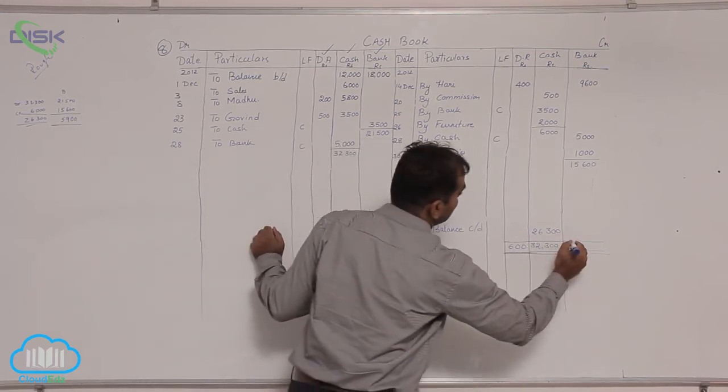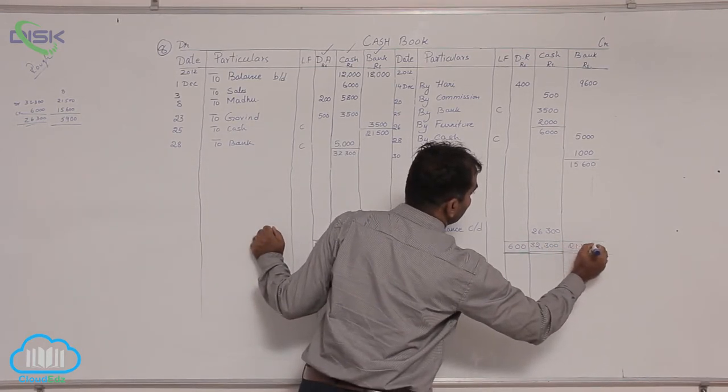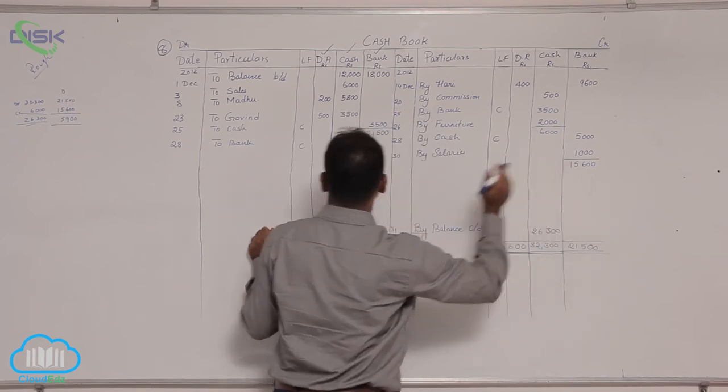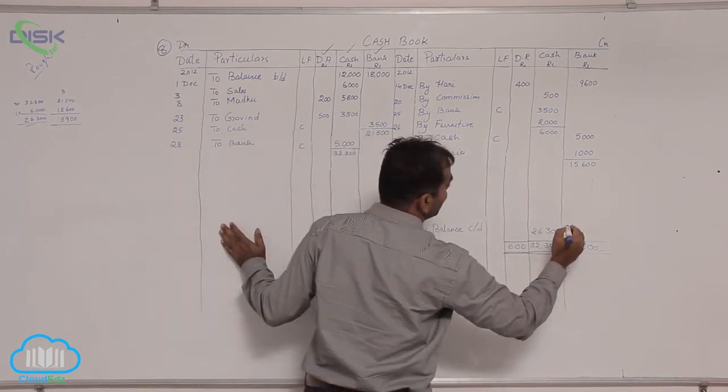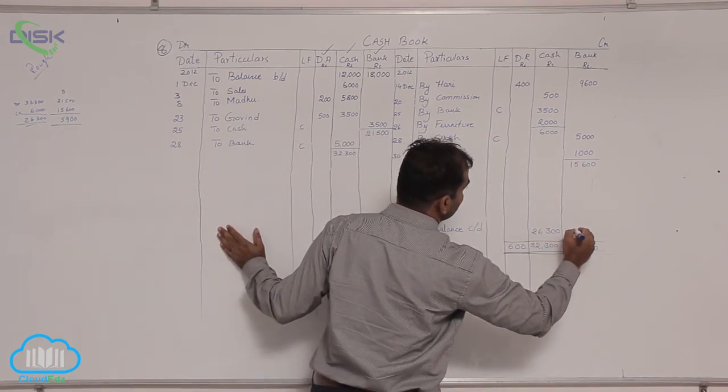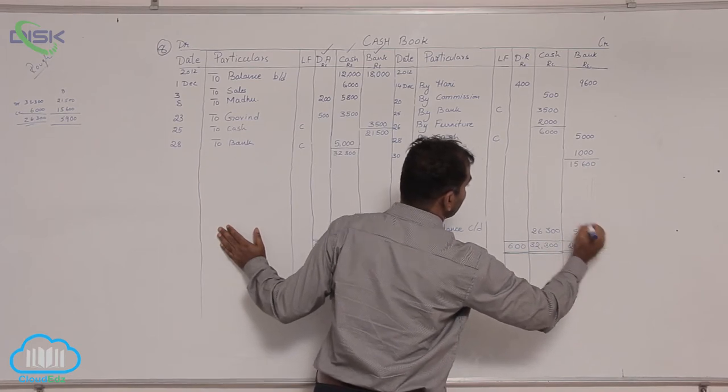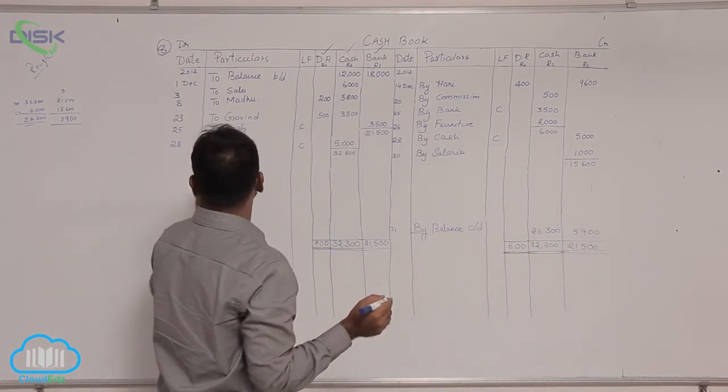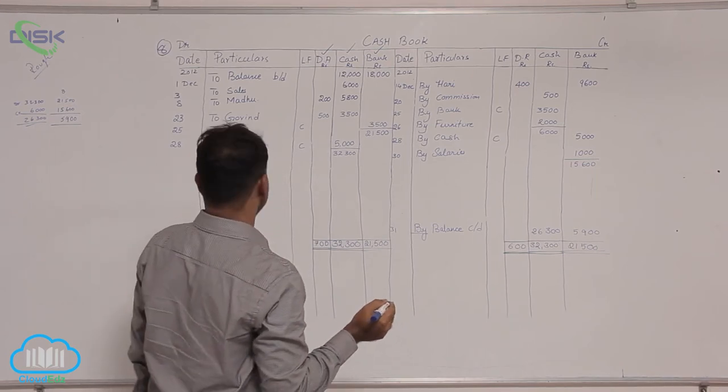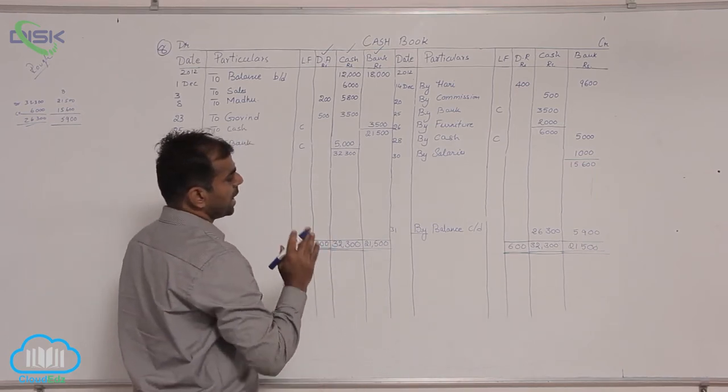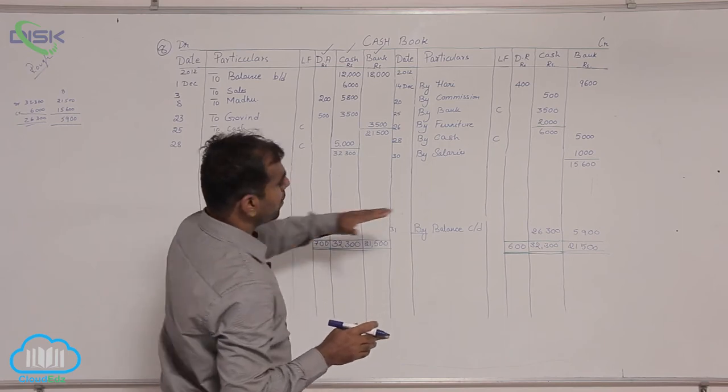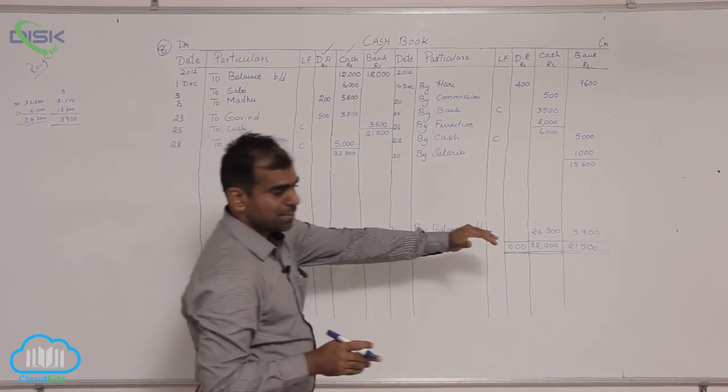In the total, now from 21,500 remove this 15,600, you will be getting 5,900. So this is your total in cash book for the bank column and the balancing figure.